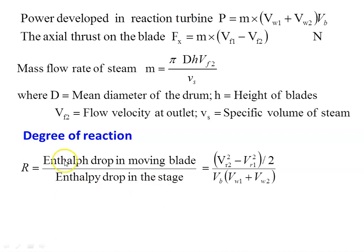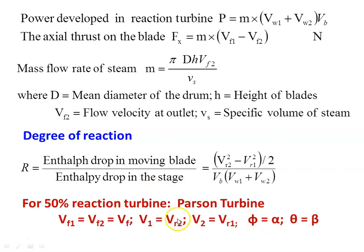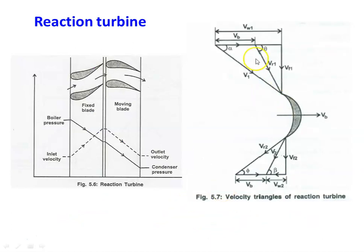For the 50% reaction turbine, the enthalpy drop is shared equally — 50% in the moving blade and 50% in the fixed blade. Implementing this condition gives: Vf1 = Vf2, V1 = Vr2, V2 = Vr1, phi = alpha, and theta = beta. The 50% reaction turbine was first designed by Parsons. With all these conditions applied, the velocity triangles are symmetrical.